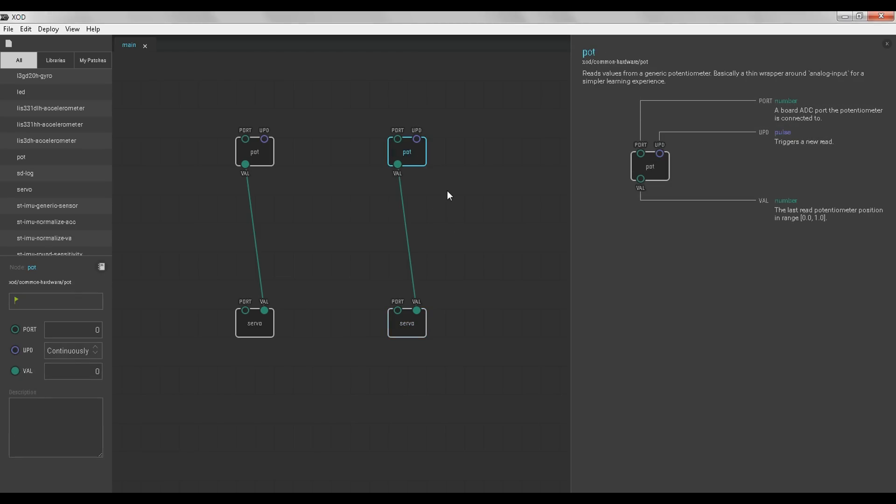And for the potentiometer, you can see how the output is a value from 0 to 1 depending on how much you've rotated the potentiometer. This is perfect, it's exactly what the servo node would expect to see on the input, so we can connect the 2 nodes directly with a wire.